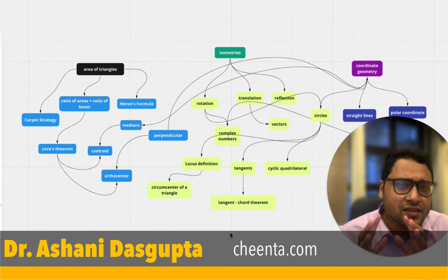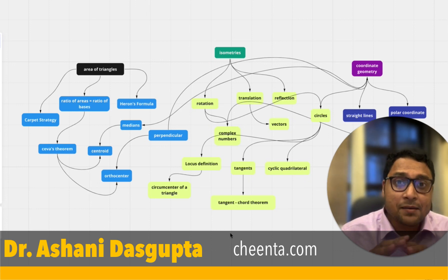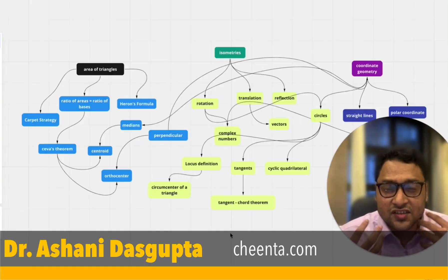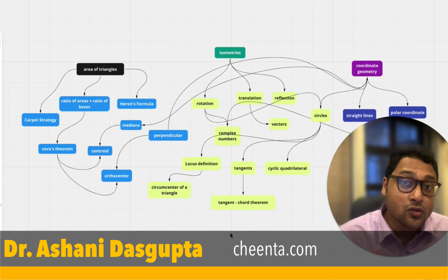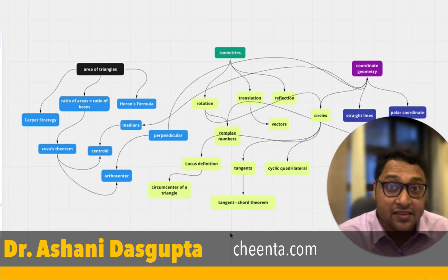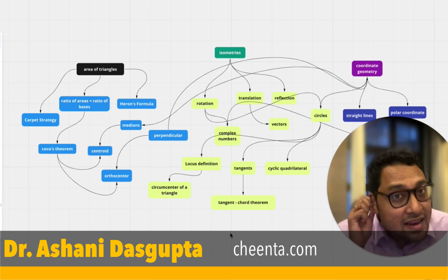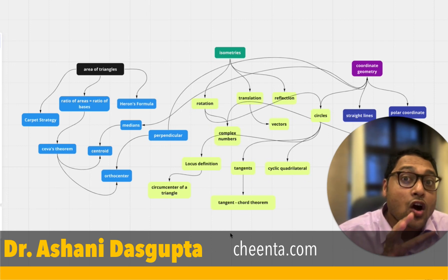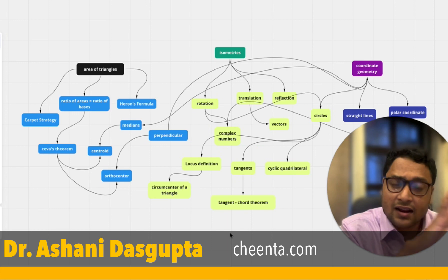I'll talk about a very interesting thing today. Perhaps you can see in the video right now at the background — this is a map for geometry for olympiads. Of course this is just a starter's or beginner's map. When we create our courses at Jinta and we create lesson plans, we actually use maps like this. This one is for AMC 10, the American Math Competition 10. There are similar maps for IOQM and other contests as well.